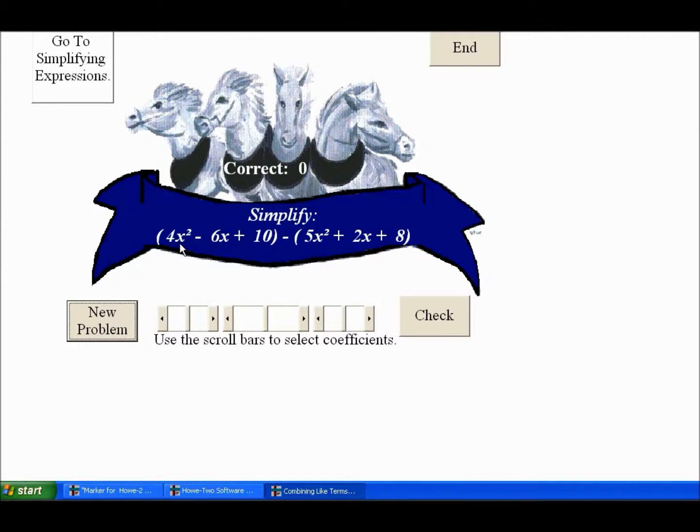And so this would be the same as 4x squared minus 5x squared. So that'd be minus 1x squared. This would be the same as minus 6x minus 2x minus 8x. 10 minus 8, 2.